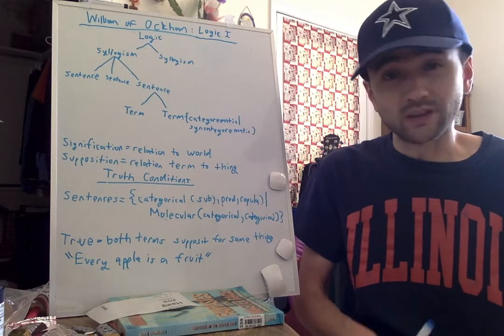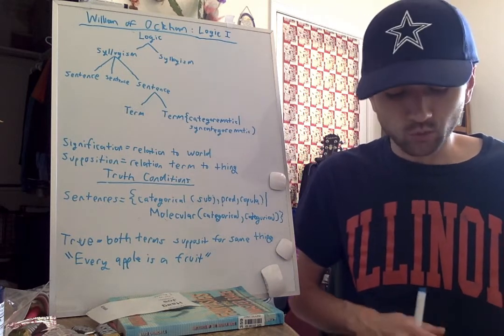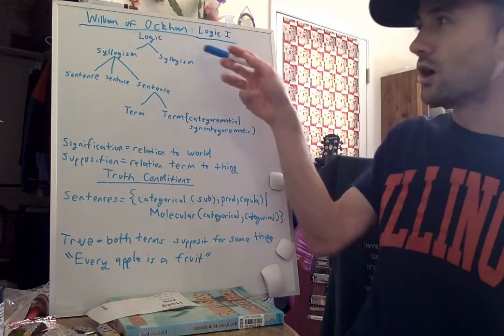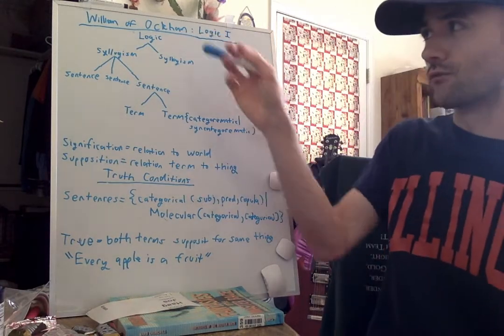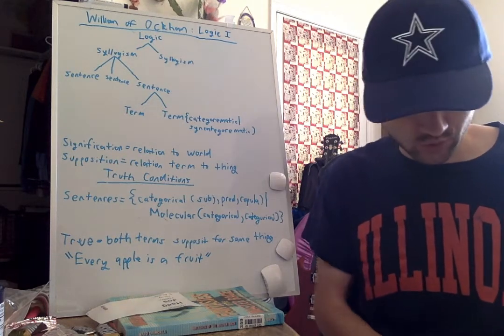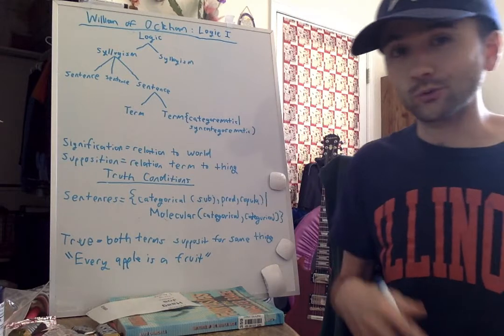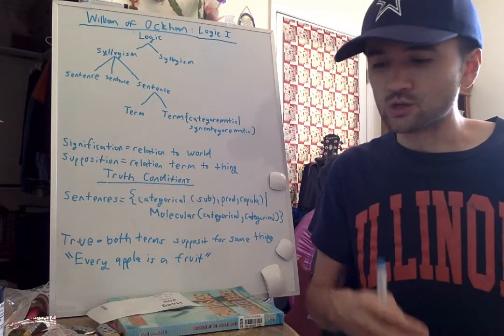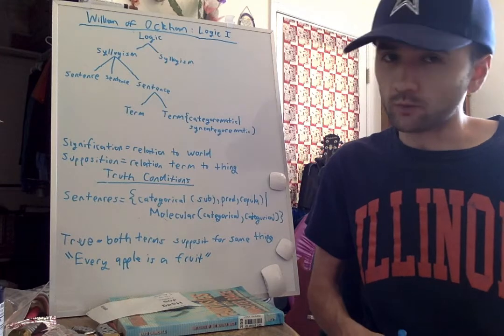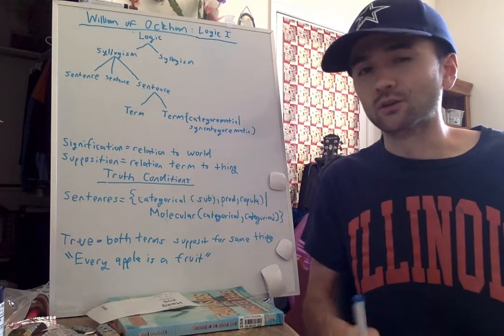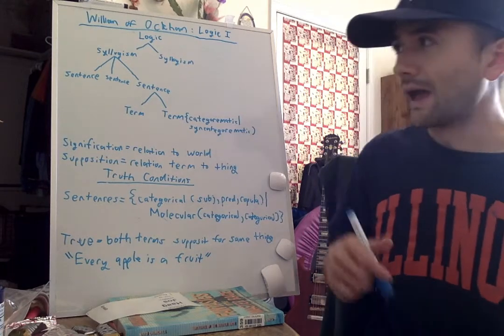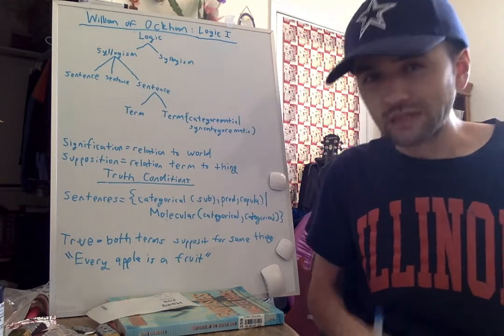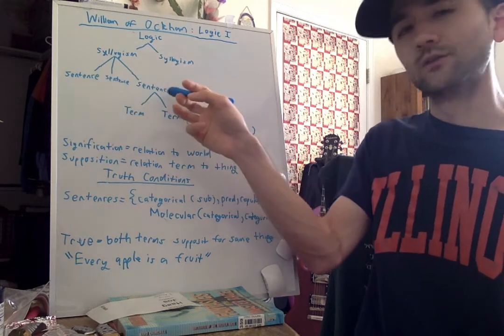This will be an introduction to his logic. Logic is the science of syllogisms, and syllogisms deal with sentences. The most famous example is determining whether Socrates is mortal, because we know Socrates is a man, we know all men are mortals, so therefore we can arrive at the conclusion that Socrates is also mortal. A syllogism is understood as dealing with a set of sentences.